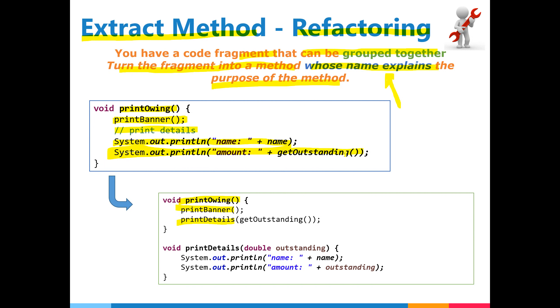You have a code fragment that can be grouped together. Turn the fragment into a method whose name explains the purpose of the method. So names are so important. Look at this example. You have a printOwing function, and it has a print banner and this comment says also, can you extract me into my own function. So we can say printDetails function, we can extract and call from that one. This is called extract method.